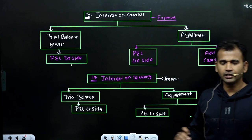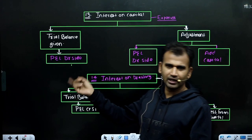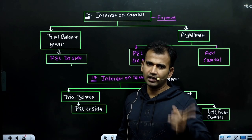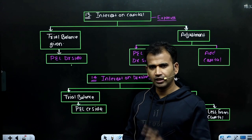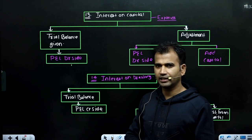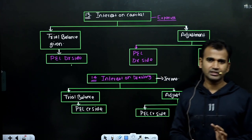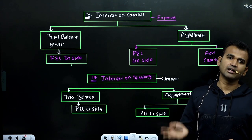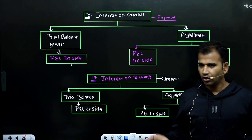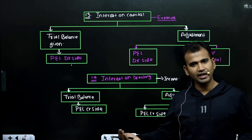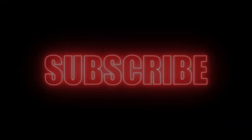Summary: Interest on capital business के लिए खर्चा है। Trial balance में given हो तो P&L के debit में single entry; adjustment में given हो तो P&L के debit में जाएगा साथ-साथ capital में add होगा। Drawing के case में capital में less होगा और P&L के credit side में जाएगा।